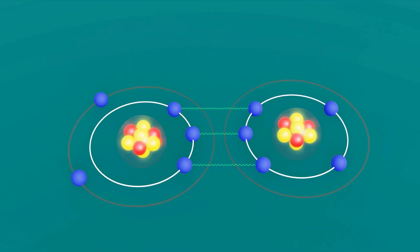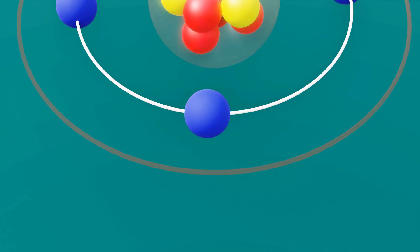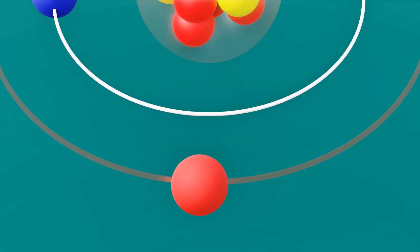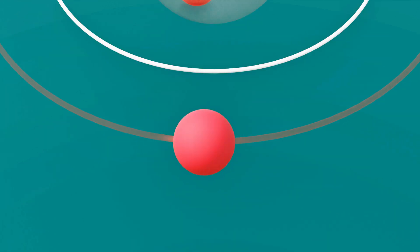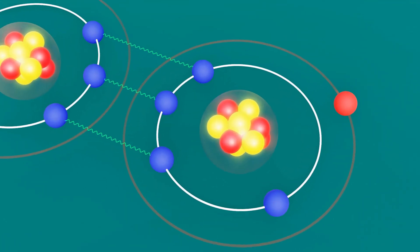This added energy can cause one of the atom's electrons to move to a higher orbital, a process known as an orbital jump, quantum jump, or atomic electron transition. The transition happens extremely quickly, typically in nanoseconds or less, and appears almost instantaneous.